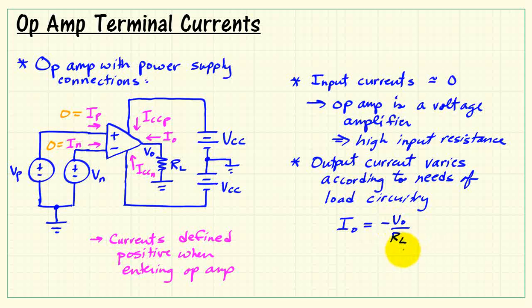So we see that the output current depends both on the output voltage and the value of R sub L. So it just varies as needed.